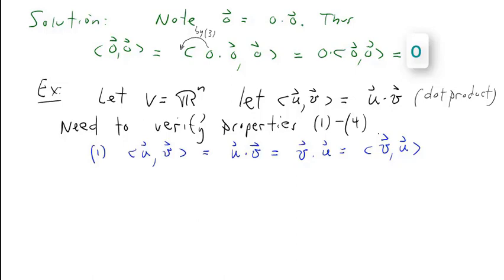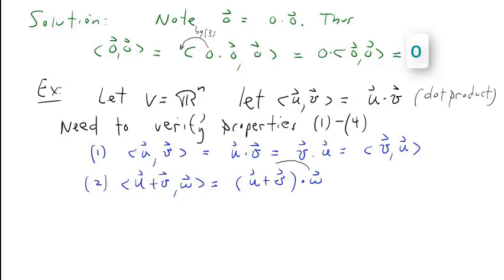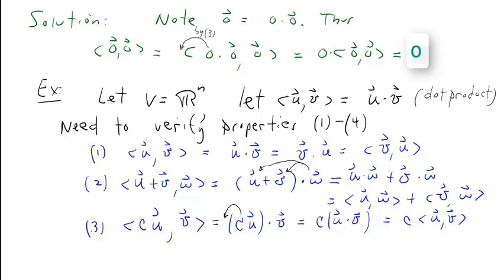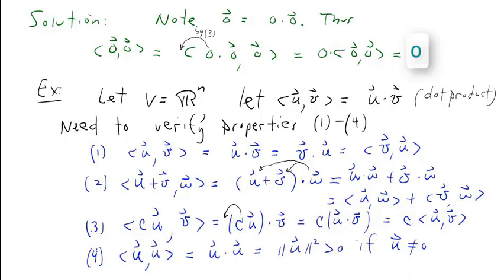Property two: the inner product of u plus v and w equals the dot product of u plus v and w. By properties of the dot product we can distribute w to u and v, giving u dot w plus v dot w, which is just the inner product of u with w plus the inner product of v with w. Property three: the inner product of cu and v — we can pull c out in front of the dot product and therefore in front of the inner product.